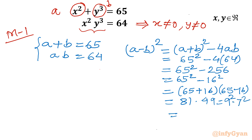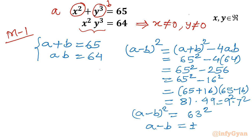Since the exponent is the same, I can take the product of the bases: 9 times 7 is 63, so it is 63 whole squared. On the left hand side we have a minus b whole squared. After taking the square root, a minus b equals plus or minus 63. Now a minus b is known and a plus b is already known.